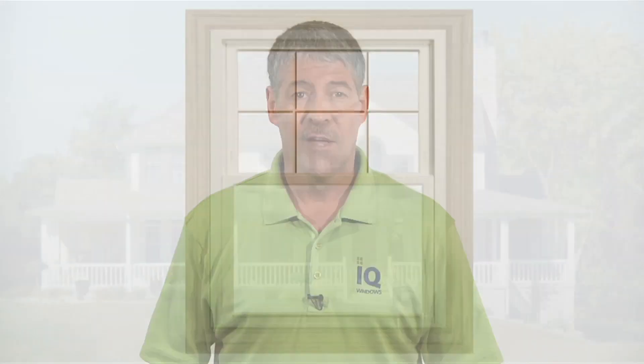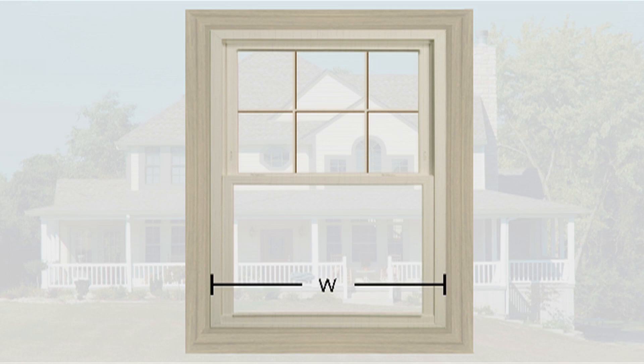Just take simple width and height measurements on the inside casing or trim around the interior of your existing windows. First, you need to measure the width of the window, which is the distance between the left and right jams.